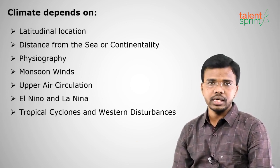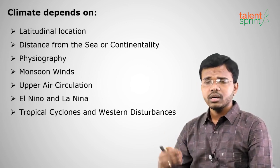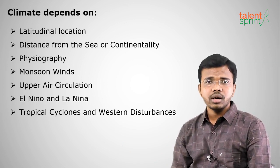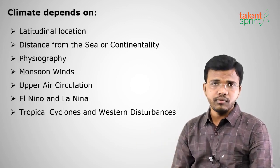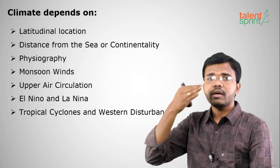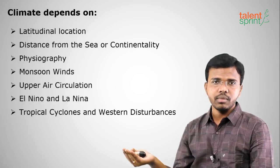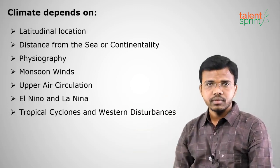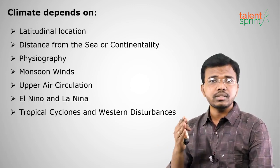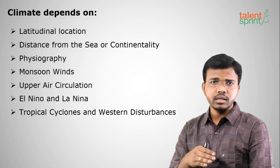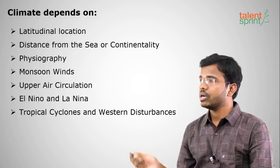Continentality refers to distance from the sea. Winds are associated with water, so if you are nearby the sea you are under the control of the sea — winds carry moisture and have a moderate influence. If you are far away from the sea, you will have extreme high or extreme low temperatures. For example, Hyderabad has moderate temperatures compared to Delhi because Delhi is far from the sea — that's why Delhi has extreme summers and extreme winters while Hyderabad has medium climates.